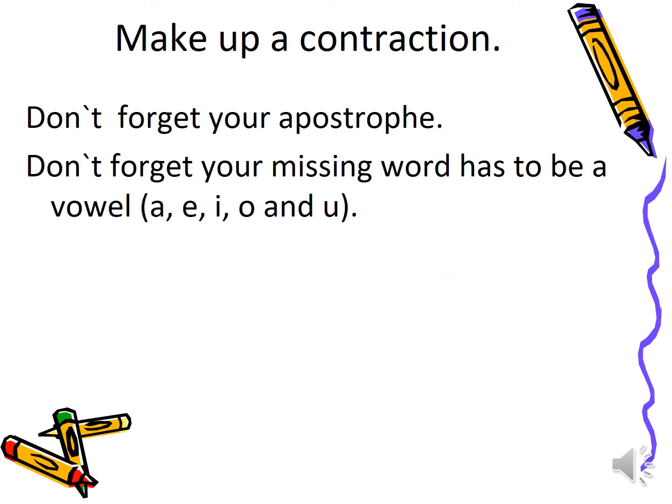When making a contraction, don't forget your apostrophe. When we're shortening two words — so 'I have' shortened to 'I've' — you must remember the apostrophe. Also note: the missing letter has to involve a vowel — A, E, I, O, and U. It may be a letter with a vowel, but it will involve a vowel at all times as a general rule.